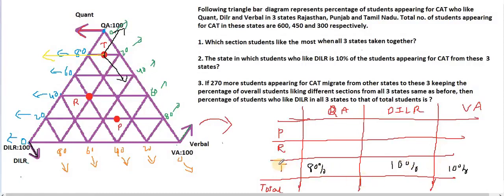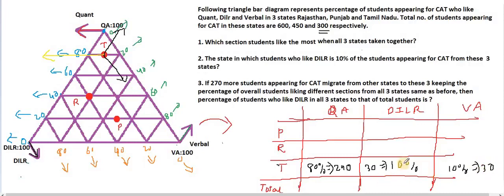It means 80% of the students of Tamil Nadu like quant, 10% like DILR, and 10% like verbal. We also know that the total students appearing for CAT from Tamil Nadu is 300. So 80% of 300: 10% is 30, so 80% is 240. DILR is 10% — that is 30. Verbal is 10% — that is also 30.